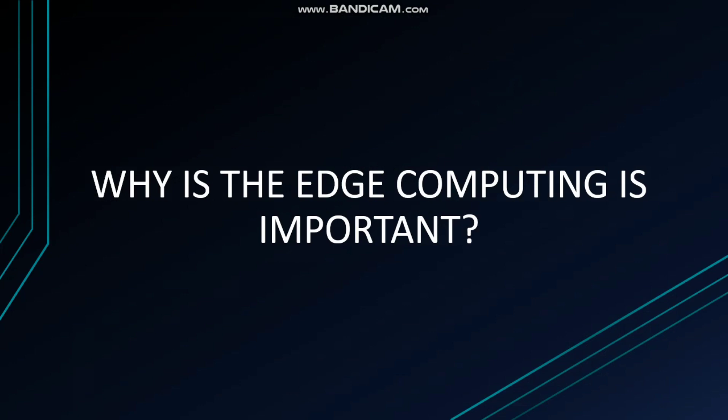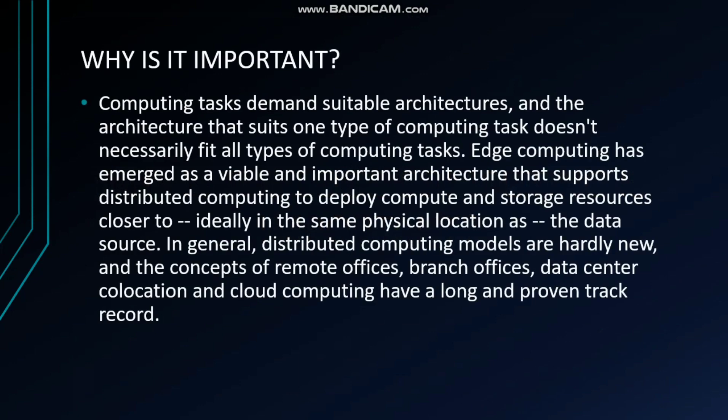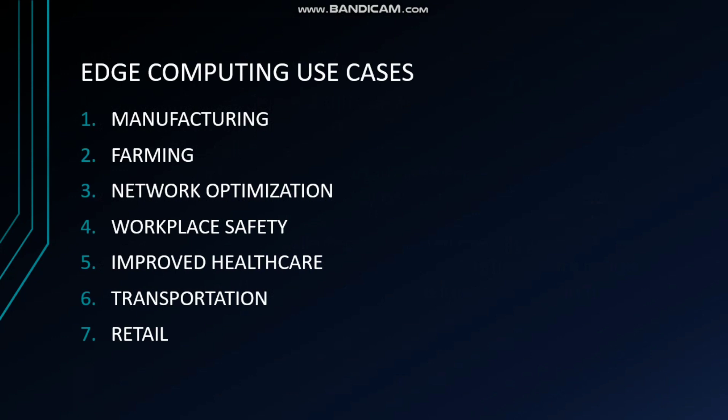But still, why is edge computing important? Computing tasks demand suitable architectures, and the architecture that suits one type of computing task doesn't necessarily fit all types. Edge computing has emerged as a viable and important architecture that supports distributed computing to deploy compute and storage resources closer to — ideally in the same physical location as — the data source. Distributed computing models are hardly new, and concepts like remote offices, branch offices, data center collocation, and cloud computing have a long and proven track record.